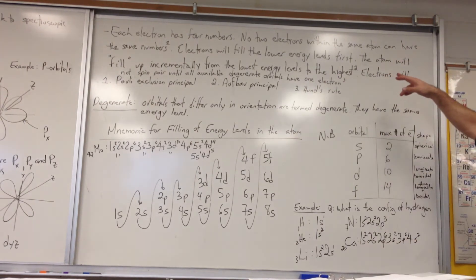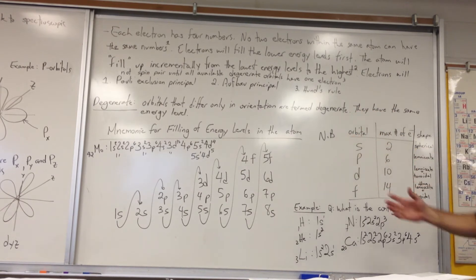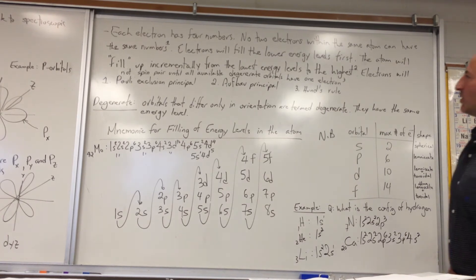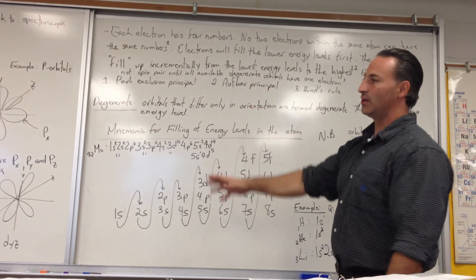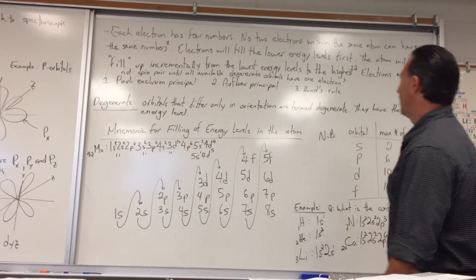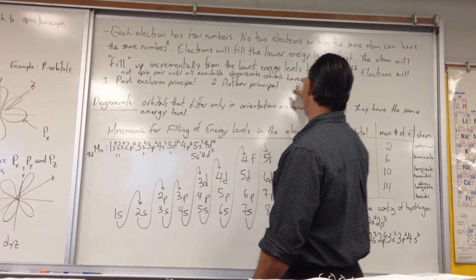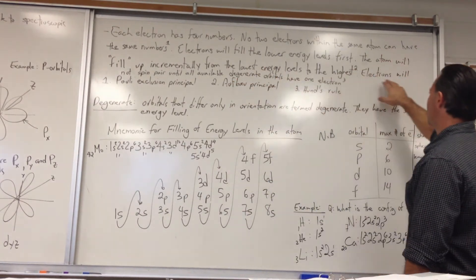Electrons will fill the lower energy levels first. So you always take the most favorite seat on the bus that you can find. Electrons will always fall to the lowest energy level that's available. That's called the Aufbau Principle. The atom fills from the lowest energy level to the higher energy levels.